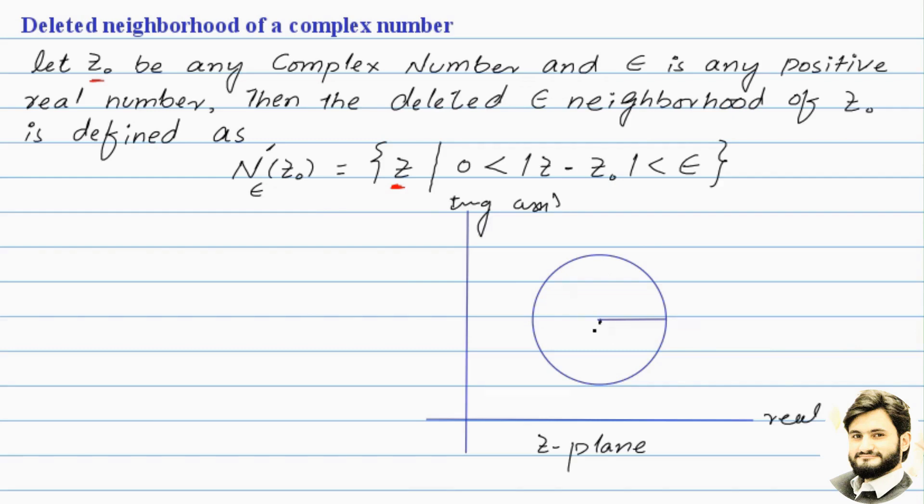Let's draw a 2-plane and choose a point, and this point is z-naught. It's a complex number. Around this complex number, draw a circle with radius epsilon. Here, all the points inside the circle come to the neighborhood of z-naught.